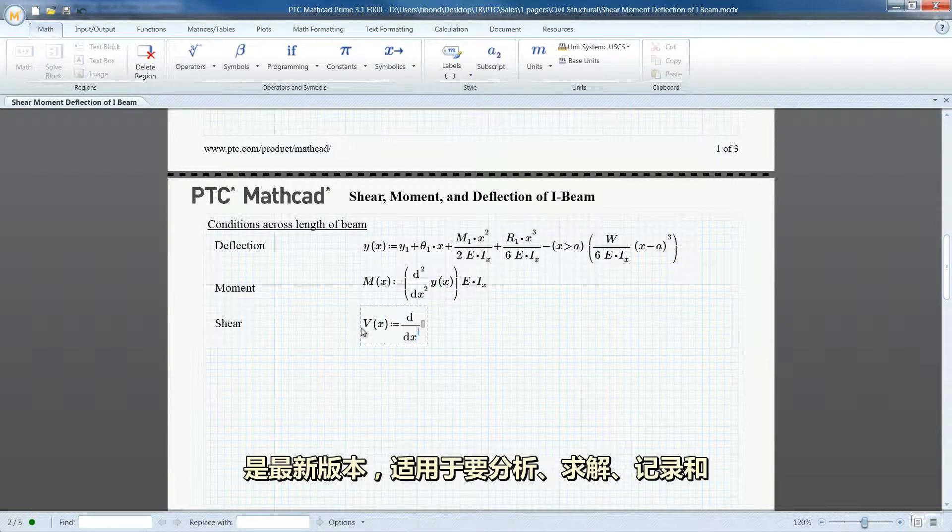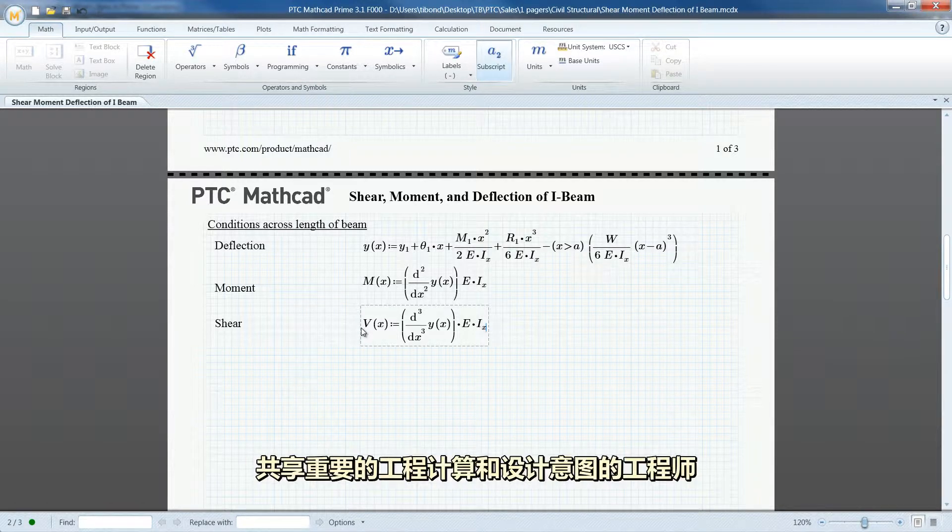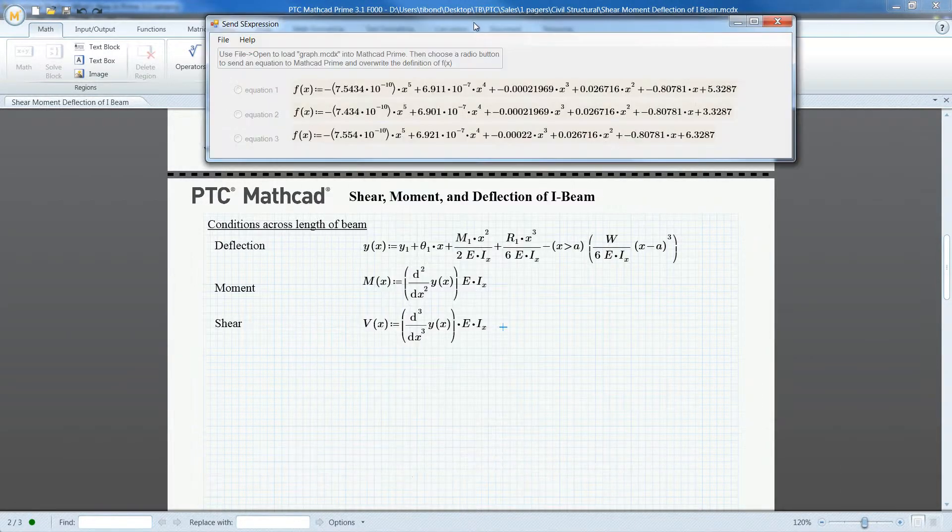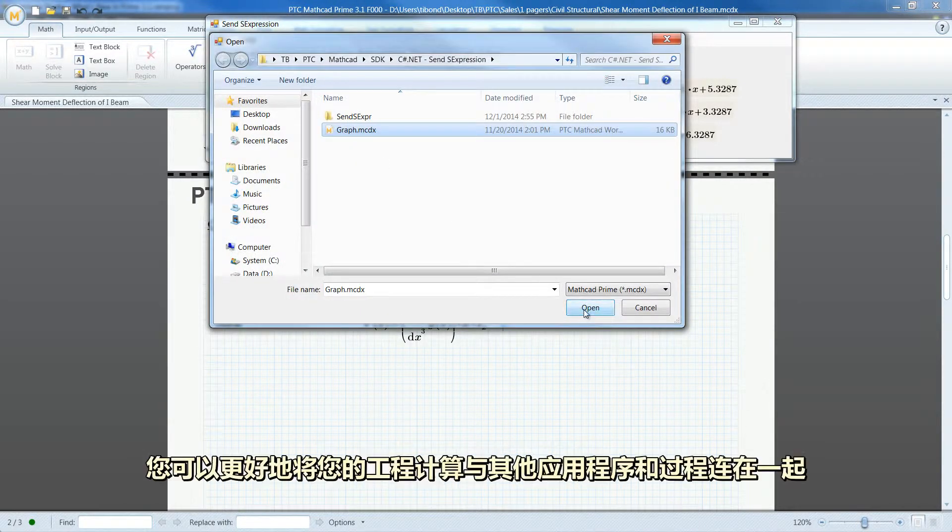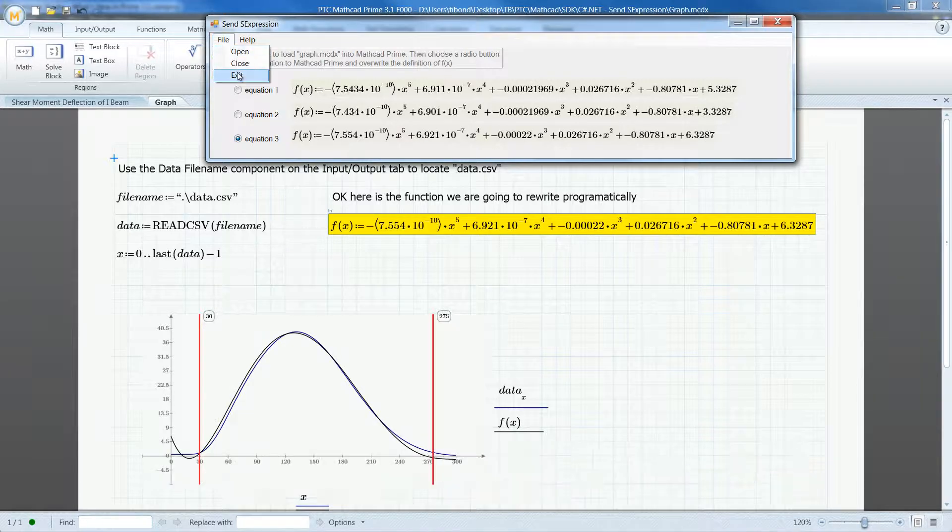PTC MathCAD Prime 3.1 is our latest release for engineers who want to analyze, solve, document and share vital engineering calculations and design intent. With the new features in this version, you can better connect your engineering calculations to other applications and processes.